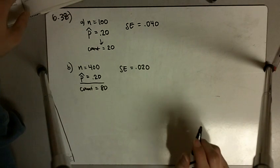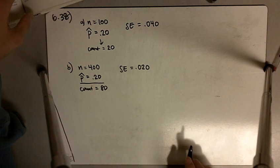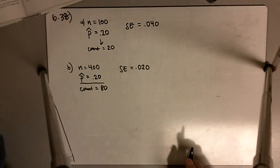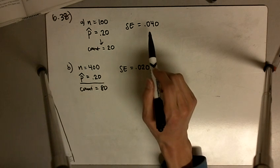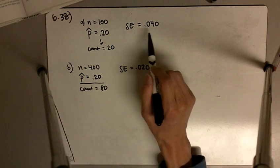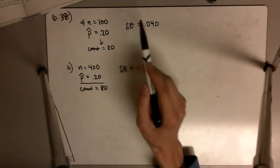638 says refer to 637 and in each case construct a 95% confidence interval for the population proportion of mutants. So I summarized what we did in part 637 and said the standard error for a sample of size 100 is 0.040.